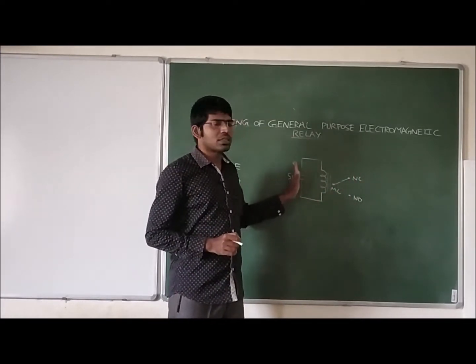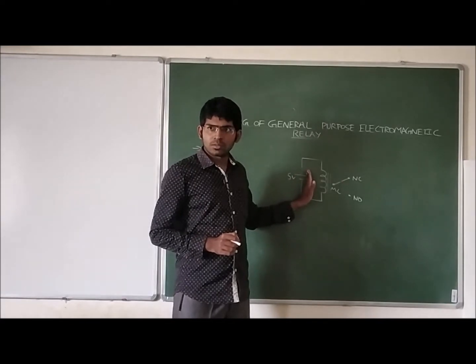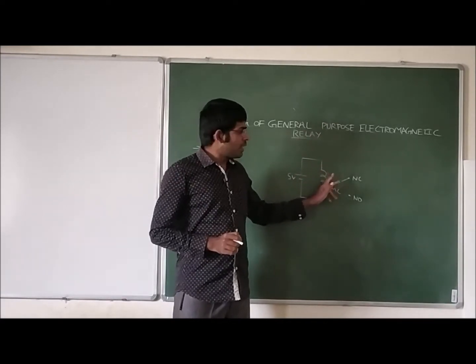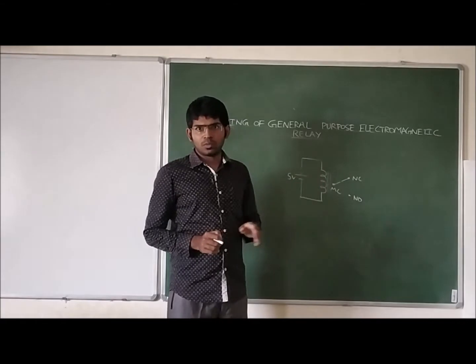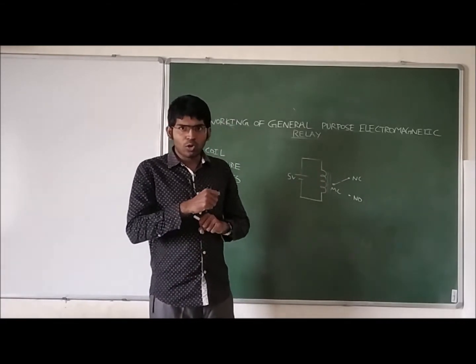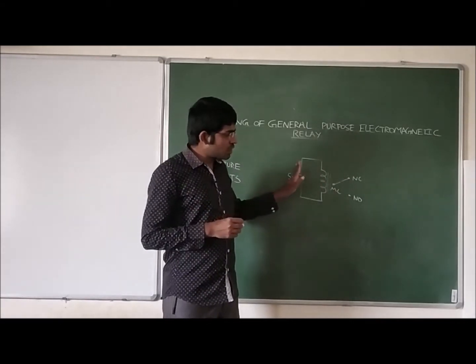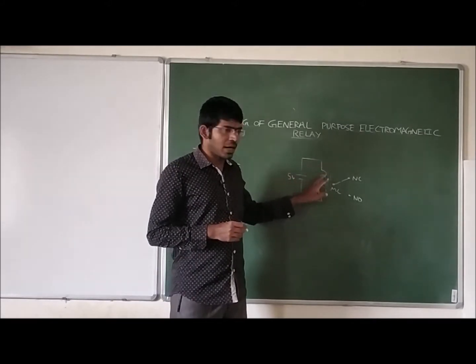Now when we provide the supply, 5 volts to this relay - generally we use an iron core. On the iron core we wrap this copper wire. So because of this applied voltage, we observe current.